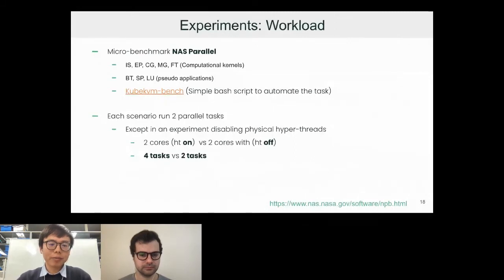For our experiment, we run the micro benchmark NASA Parallel Benchmarks with computational kernels and some pseudo applications. They're basically doing some sort of matrix computation tasks using CPU intensively. I wrote a simple bash script to automate the whole task where you can modify the XML file on the fly and launch the VMs, running the benchmarks inside for multiple times. For each scenario, we run two parallel tasks except for one experiment where we wanted to see how much throughput gain from hyperthreading. We allocated two cores with hyperthreading on compared with two cores with hyperthreading off. So for the first case we run four parallel tasks compared to two tasks to see how much gain we get.